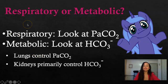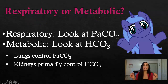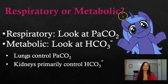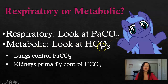Next, we need to determine if it's respiratory or metabolic. Once you know the pH is acidic, ask: is it respiratory or metabolic? When it's respiratory, you look at the PaCO2 — the carbon dioxide. If it's metabolic, you look at the bicarb. Respiratory has to do with CO2; we exhale CO2. Metabolic is bicarb. CO2 is acidic; bicarb is basic.